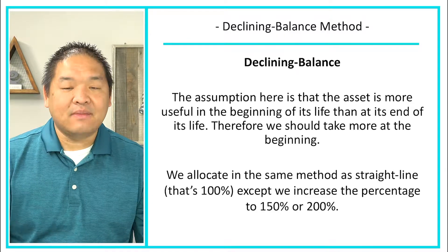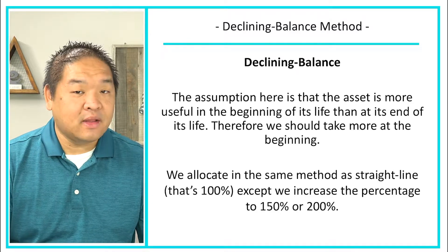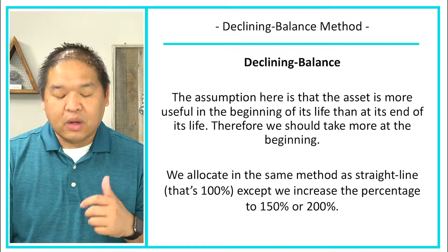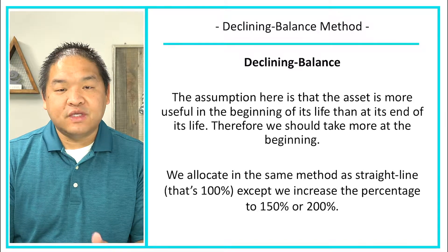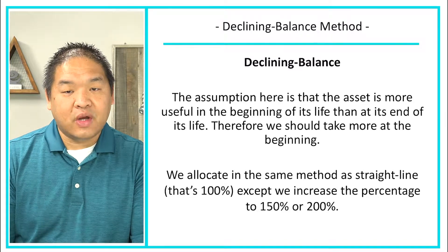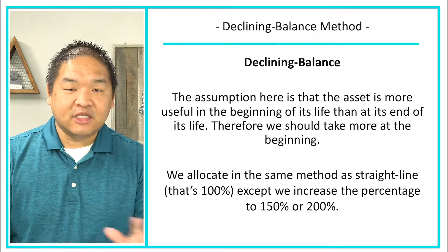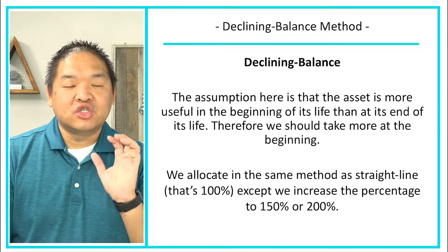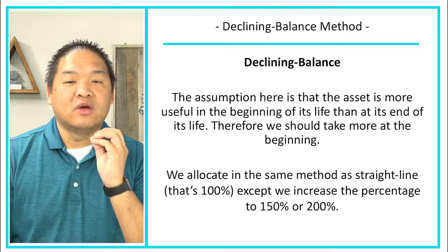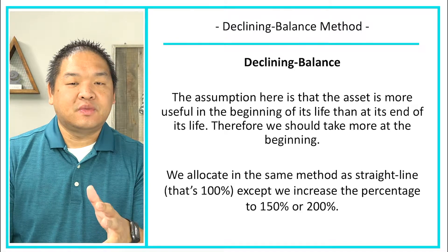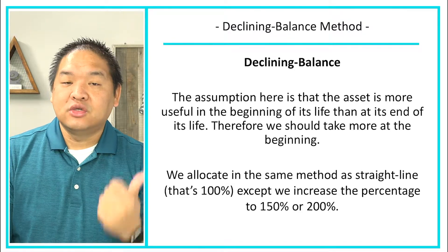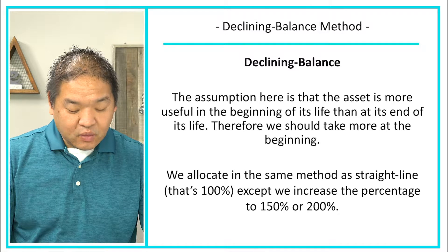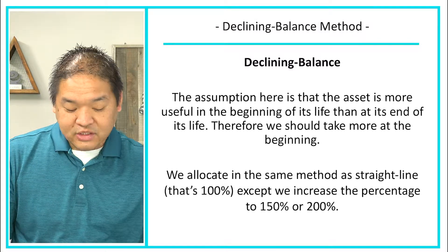We allocate using the same approach as straight line, but the key difference is that we increase the percentage to 150 or 200 percent. For all intents and purposes, when you see 'declining method,' unless otherwise told, just assume it's 200 percent. Assume 200 percent unless otherwise told to use 150 percent.